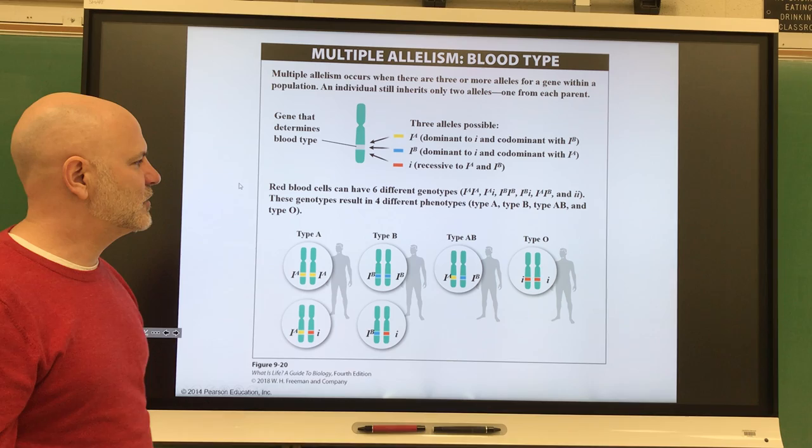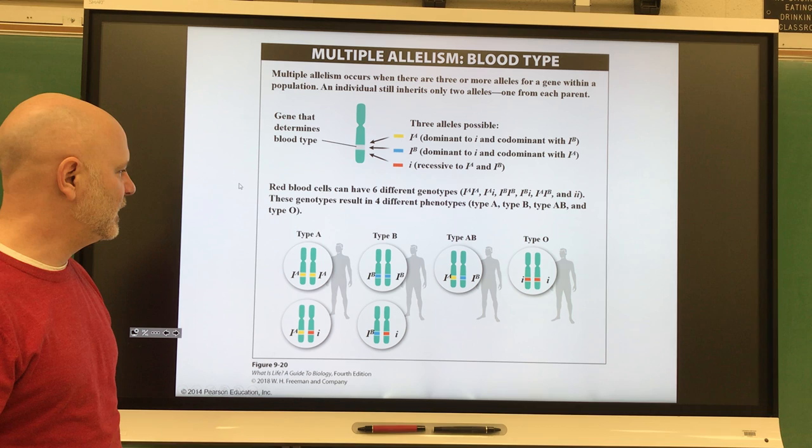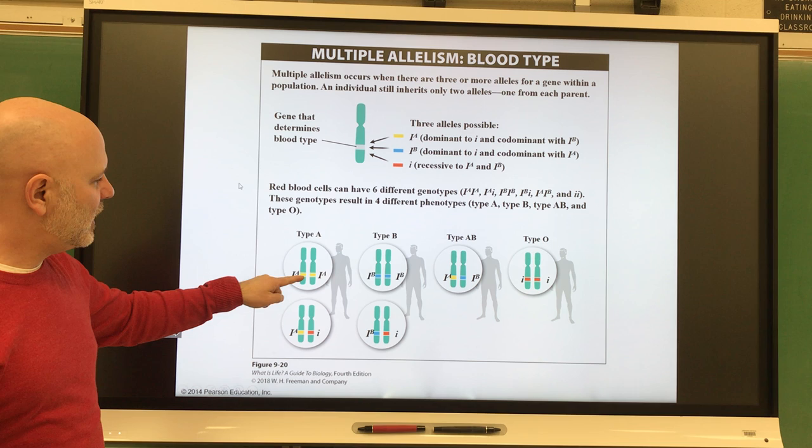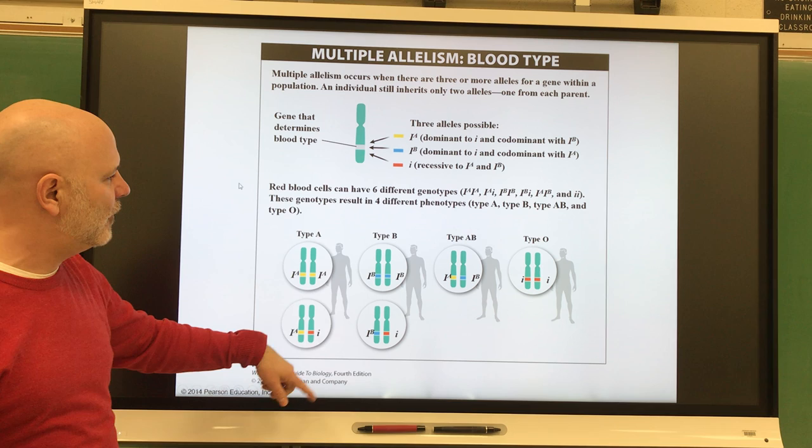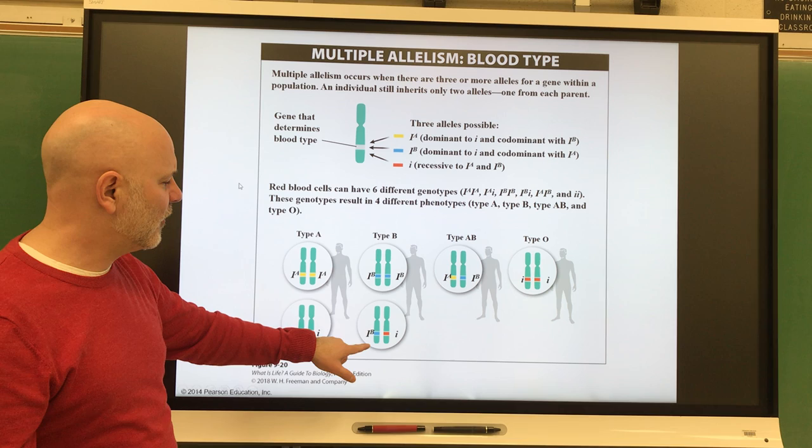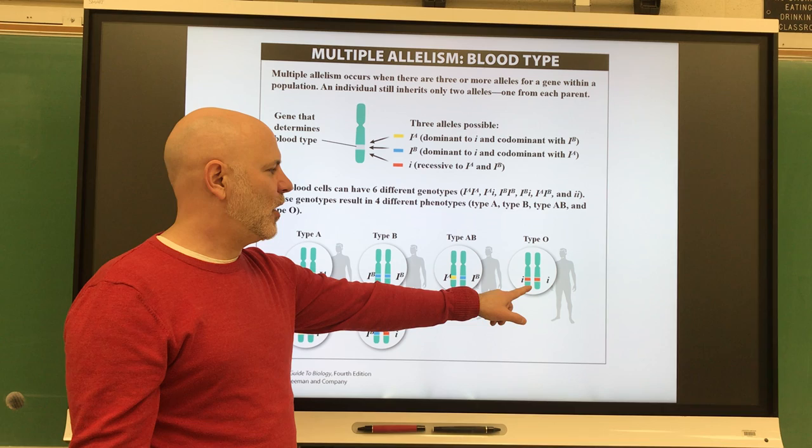To be type A, you can either have two alleles for A, or one allele for A and one allele for O. To be type B, you can either have two alleles for B, or one allele for B and one allele for O. To be AB, you have to have one of each, and to be type O, you have to have both of those recessive alleles.